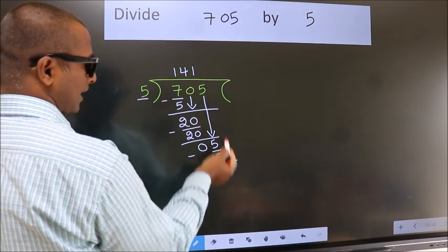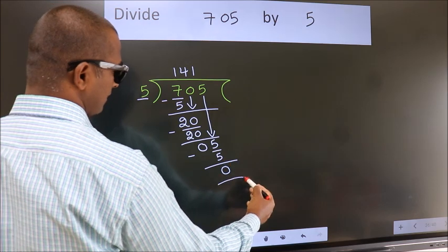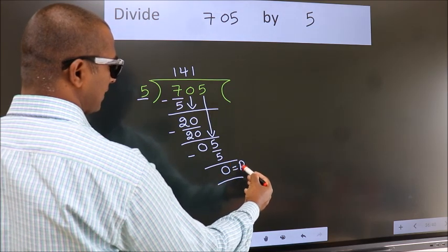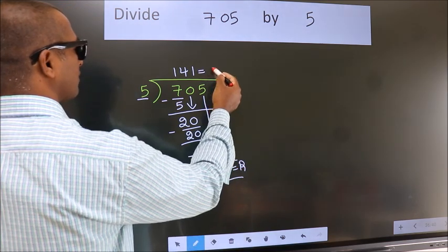No more numbers to bring it down. So, we stop here. This is our remainder. This is our quotient.